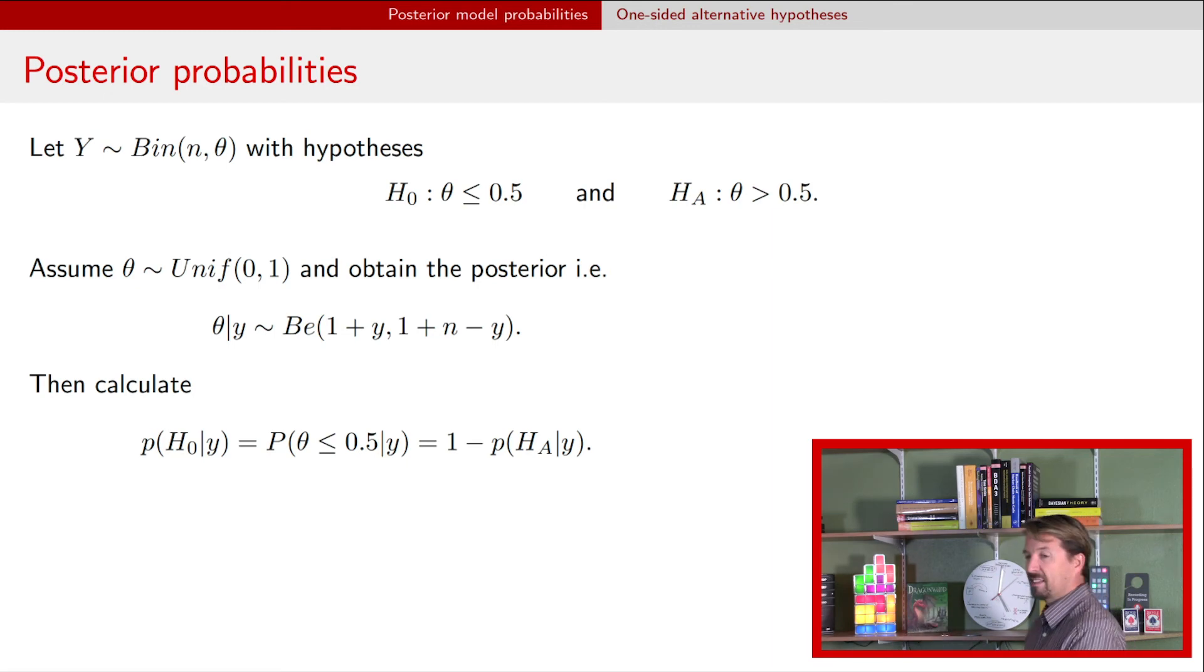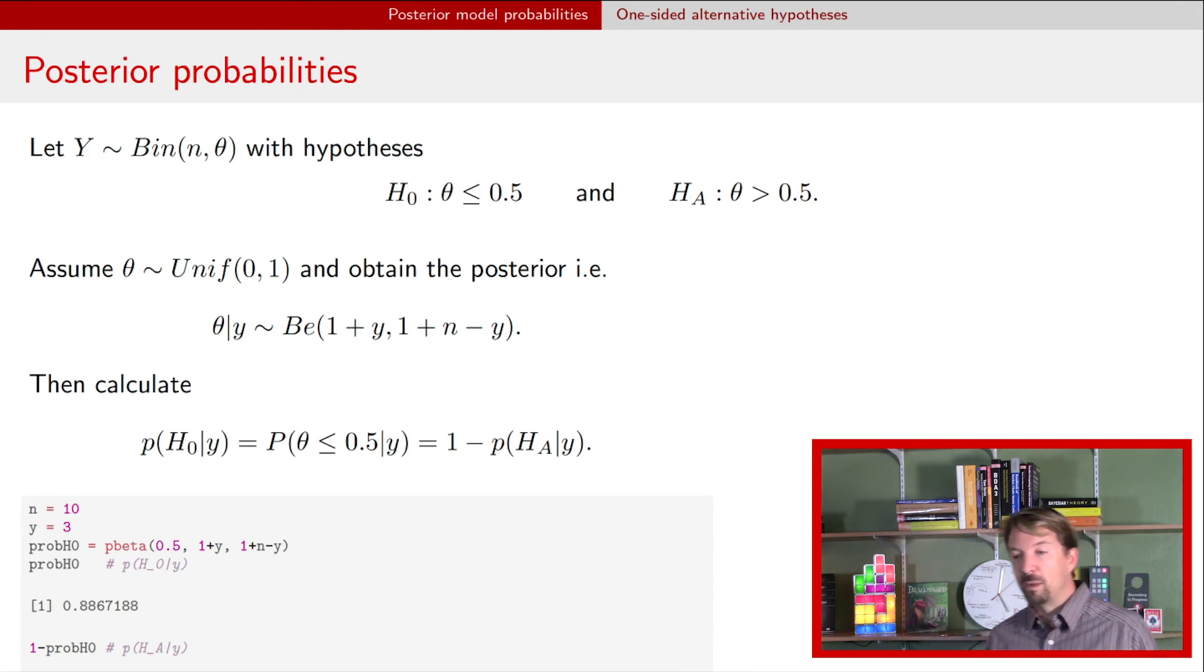Okay, so doing the calculation here in R using the R beta function, in this example we had three successes out of 10 attempts and the probability of being less than 0.5 was about 0.89.